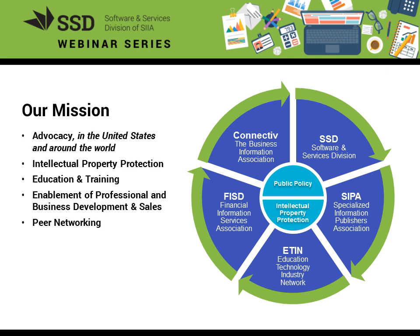Within SIA there are multiple divisions to serve our constituents. Across all divisions we strive to advocate on behalf of our members, provide professional and business development opportunities, create peer networking and thought leadership opportunities, and provide pertinent industry education. We have the Software and Services Division, which includes the regional chapter of the Technology Council of Southern California; our SIPA Division for specialized publishers; our Education Technology Industry Network; our Financial Information Services Division; and our Connective Group representing information and media organizations. In the center of all divisions are our public policy and IP protection groups.